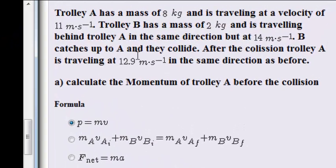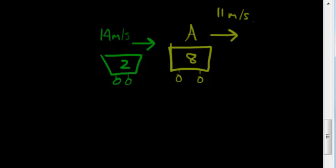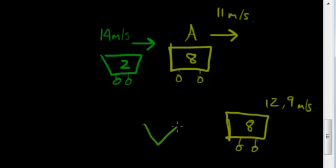B catches up to A and they collide. We don't know whether they get stuck together or not. All they tell us is that after the collision, trolley A is traveling at 12.9 meters per second in the same direction as before. This is before, afterwards, we know that trolley A is traveling at 12.9 meters per second. Eventually the question might be, what is happening to trolley B? How fast is trolley B traveling at? But that's not the first question.